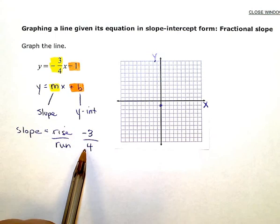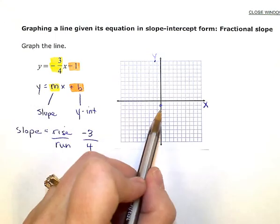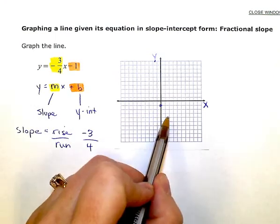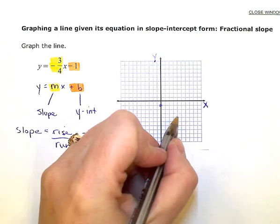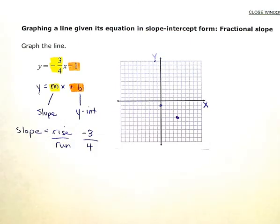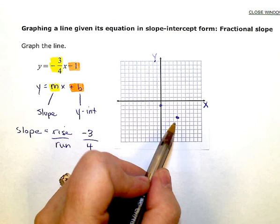So down 3 over 4 to the right. So down 3 over 4, and I put another point right there. So that gives me the direction of my line, and I can do this as many times as I want to.